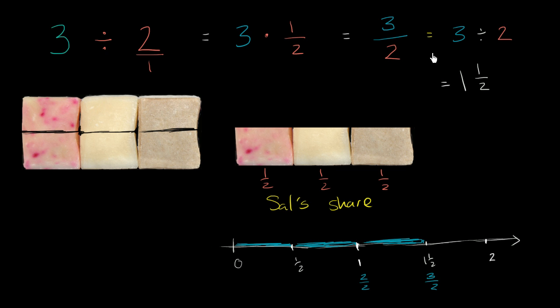So three halves is the same thing as one and a half, which is exactly what we saw here. You could view this as we have one and a half bars of soap. And this is where you would plot it on the number line. Three halves is halfway in between one and two.